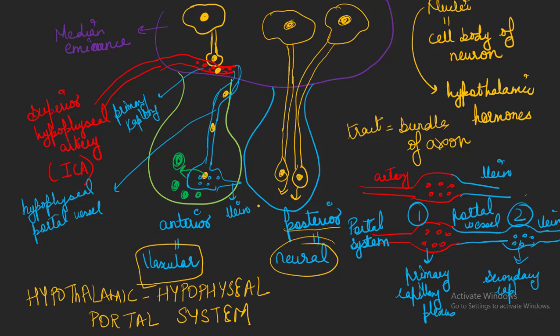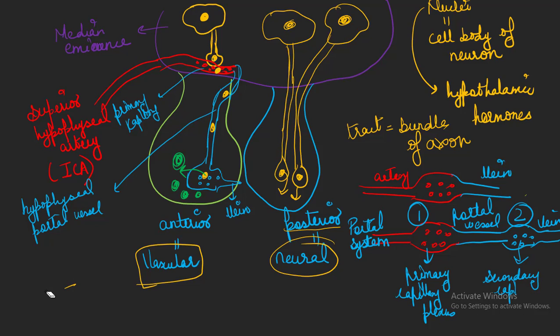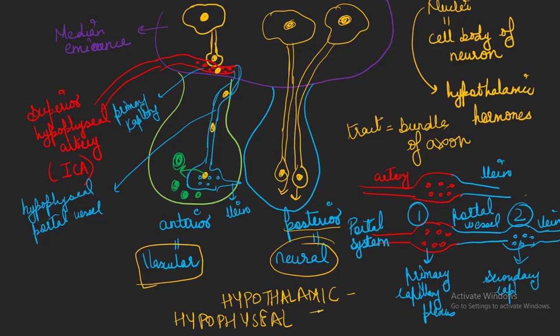The hypothalamic hormones are released by means of a tract — by means of axons that are longer and extend from the hypothalamus to the posterior pituitary. This system is called the hypothalamic-hypophysial tract, because it exists between the hypothalamus and the pituitary gland (hypophysis) and is a tract (bundle of axons). To summarize: between the anterior pituitary and the hypothalamus there is a vascular connection called the hypothalamic-hypophysial portal system, and between the posterior pituitary and the hypothalamus there is a neural connection called the hypothalamic-hypophysial tract.